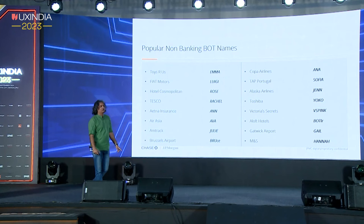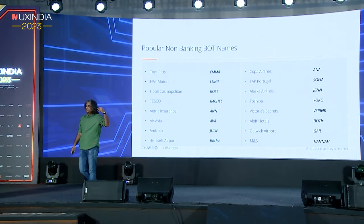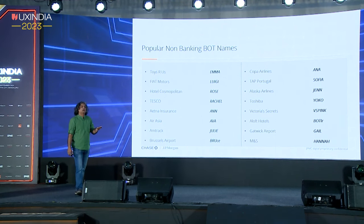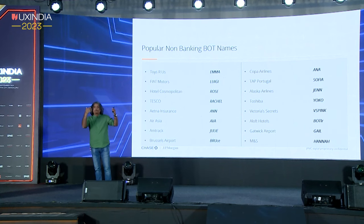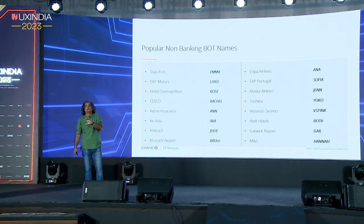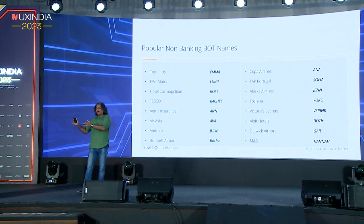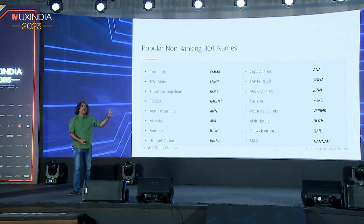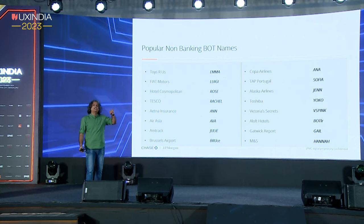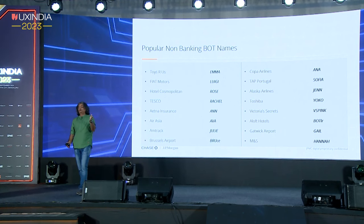Outside banking, there are some interesting trends where the logic changes. Brussels Airport uses its three-digit airport code BRU combined with the pronunciation of 'Brussels' to get Bruce. Victoria's Secret, being a brand for ladies, combines the color of feminism — pink — with their brand initials to give VS Pink. And Aloft Hotels uses the term 'butler,' very common in their business, and converts 'bot' into 'Bottler.'